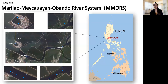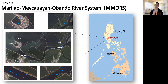This study was conducted in Bulacan, Philippines, specifically in the MMORS, or Marilao-Meycauayan-Obando River System. There were four stations sampled for sediments: two located along the river, namely River Station 1 and 2, and another two stations within aquaculture ponds — Aquaculture Pond 1 and 2. In each station, three samples were obtained at about 100 meters away from each other.